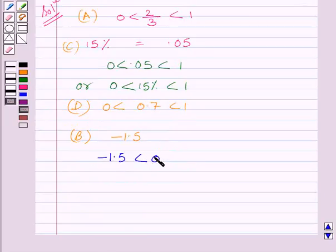And we know probability of an event is greater than equal to 0 and less than equal to 1. So, this value does not satisfy this condition. So, we get minus 1.5 cannot be the probability of an event.